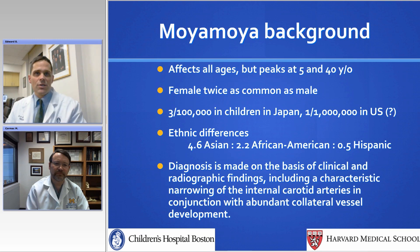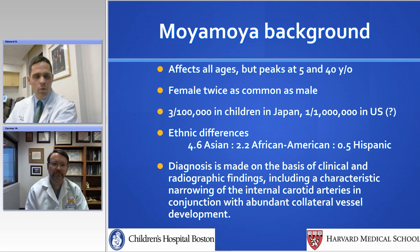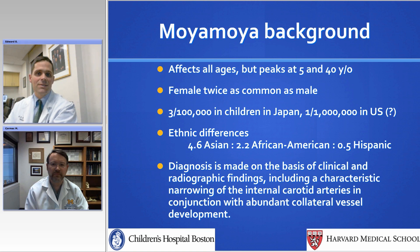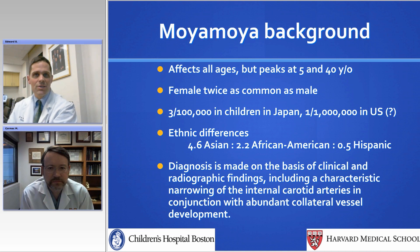Moyamoya affects all ages but has two well-known peaks: young kids around five years old, preschool age, and then young adults around 40 years old. It's more commonly present in females, and it tends to be more commonly described in those of East Asian ancestry, such as Japanese, Chinese, and Korean. While it's described as about one in a million in the United States, it actually seems to be increasingly more common, and that may be due to increased diagnoses. It is seen about twice as much in those of Asian ancestry in the United States as in those of African American ancestry, and we'll talk a little bit about sickle cell disease there, and less so in those of Hispanic ancestry.